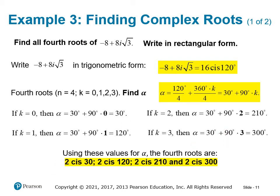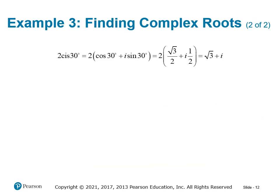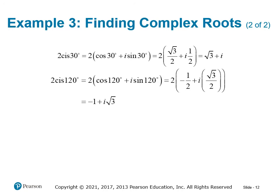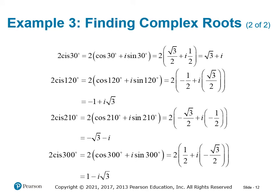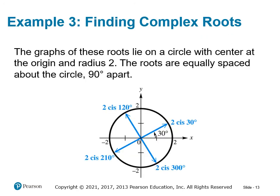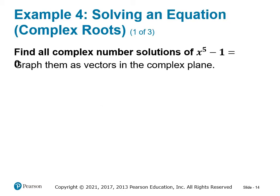We need to rewrite these back into rectangular form by multiplying out: for example, 2·cos(210°) and 2·sin(210°), and so on. You can use your calculator for these. So there we have the four fourth roots. If we graphed them, you'd see the roots are equally spaced around a circle of radius 2, separated by 90 degrees.